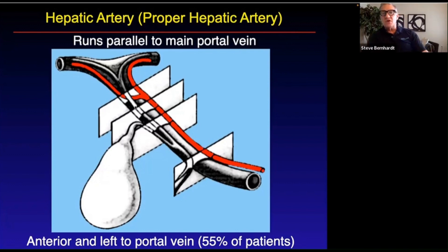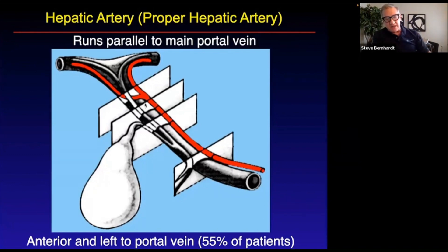I'm going to say this over and over again because you're going to be tested about it: the three vessels of the portal triad are the proper hepatic artery, the common hepatic duct, and the main portal vein. All of them are going up to the liver, and notice the first one that bifurcates is the artery. That right artery goes under the common hepatic duct — it goes between the common hepatic duct and the main portal vein. We'll talk about that and look at it sonographically more and more.